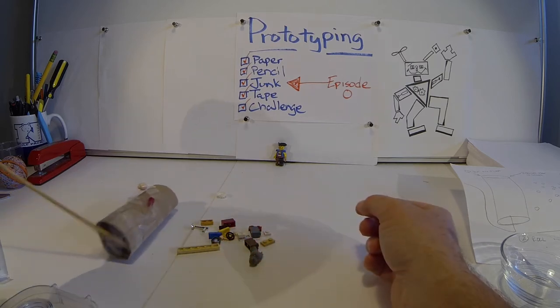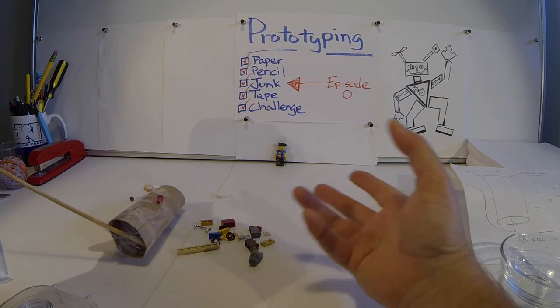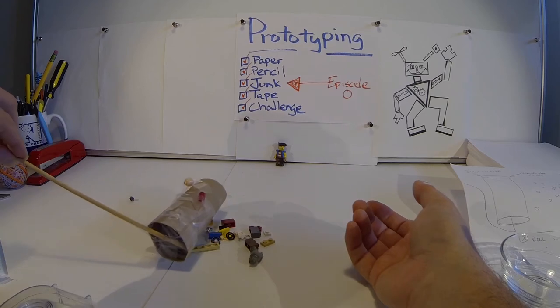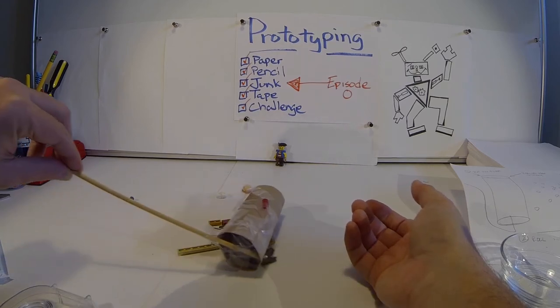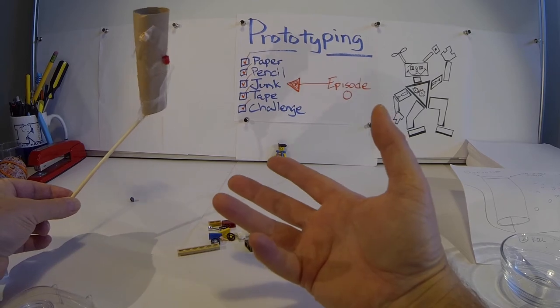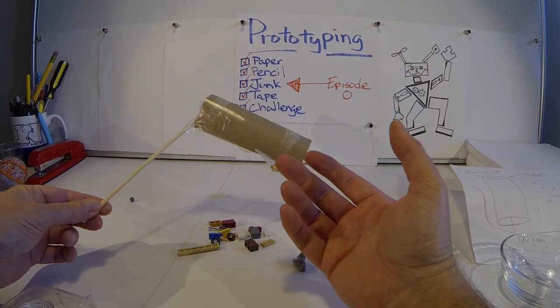And so here's my roller. And it rolls over. Now the big Lego we can pick up easy, but the little Lego gets lost. And so we roll over it and it picks up the Lego. And that is the low resolution prototype.